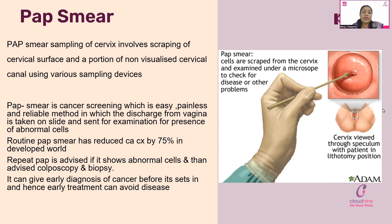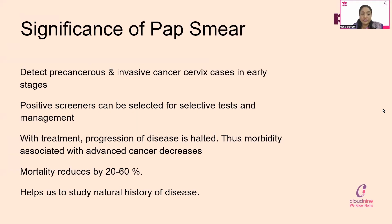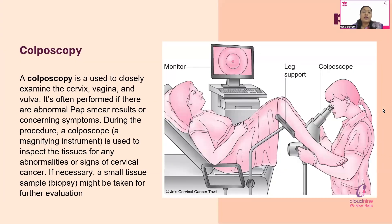Pap smear is very important to detect any precancerous and invasive cervical cancer in early stages. Positive screeners can also be selected for other tests and management. Progression of the disease can be stopped, reducing morbidity, and mortality can reduce by 20 to 60 percent. If the Pap smear is abnormal, the patient is subjected to colposcopy — closely examining the cervix with a magnifying instrument — along with a small biopsy of the abnormal area.